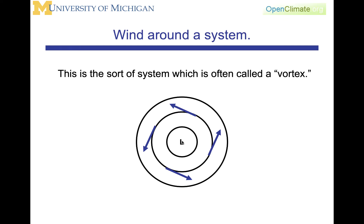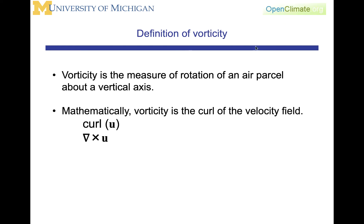If you imagine a low-pressure system with an idealized flow where the flow is perfectly circular around that low-pressure system, this type of system is often called a vortex. Many of the weather features we look at can be characterized as either a vortex or a wave. The definition of vorticity is that it is the measure of rotation of an air parcel about a vertical axis. Mathematically, vorticity is the curl of the velocity field.